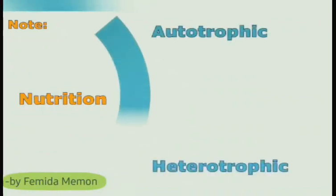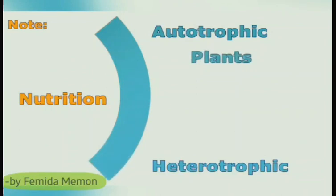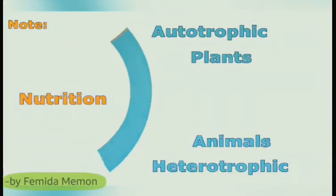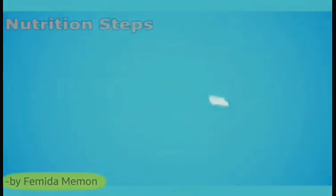Nutrition is mainly of two types: autotrophic and heterotrophic. Plants can make their own food so they are called autotrophic, while animals cannot so they are called heterotrophic.